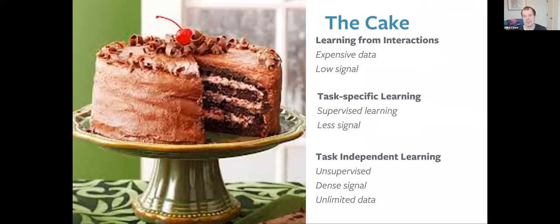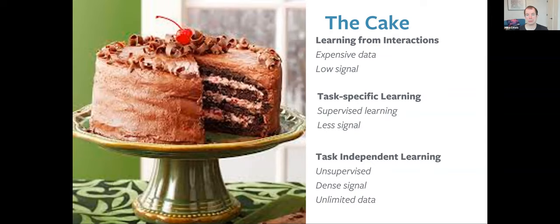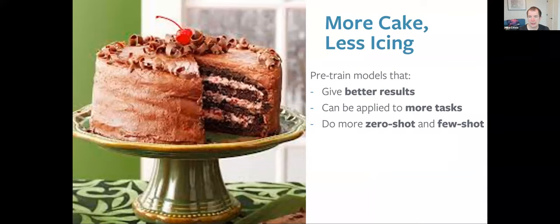The focus of this talk is going to be on the main cake, which represents unsupervised representation learning. Here we're trying to learn about natural language without any labels at all. The great thing is that we have an unlimited amount of data for this, and there's a very dense learning signal — just trying to predict what words are used, where and why, requires learning a huge amount about language. The theme is: more cake and less icing.